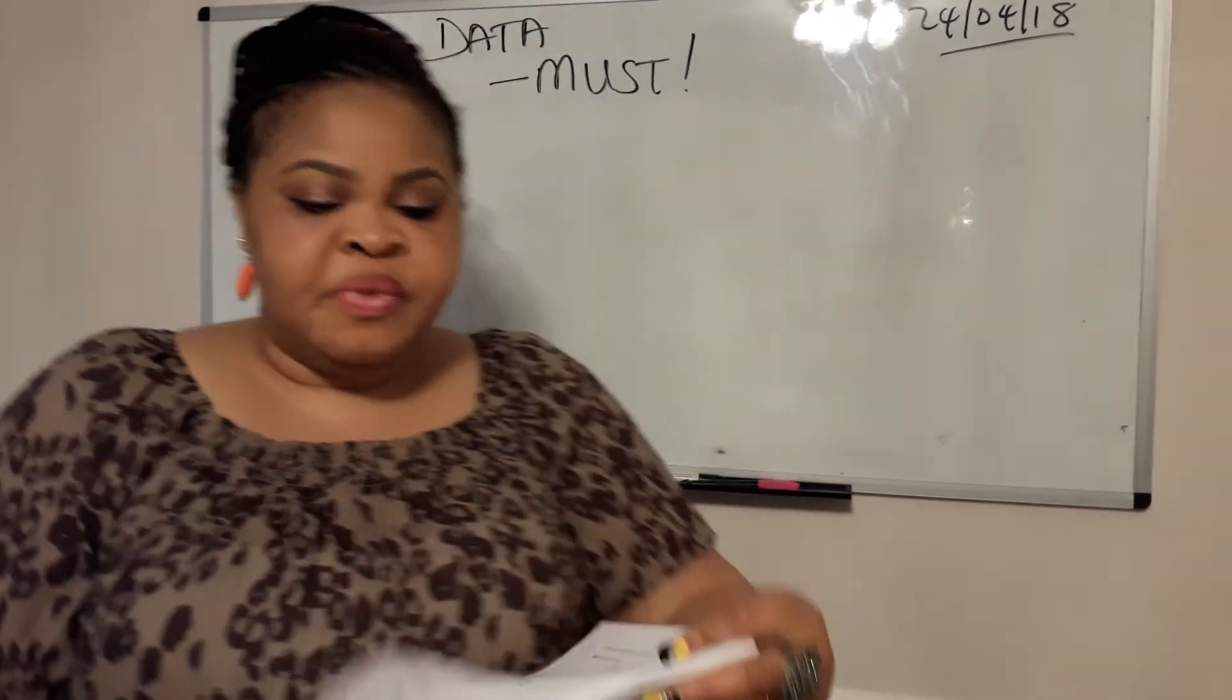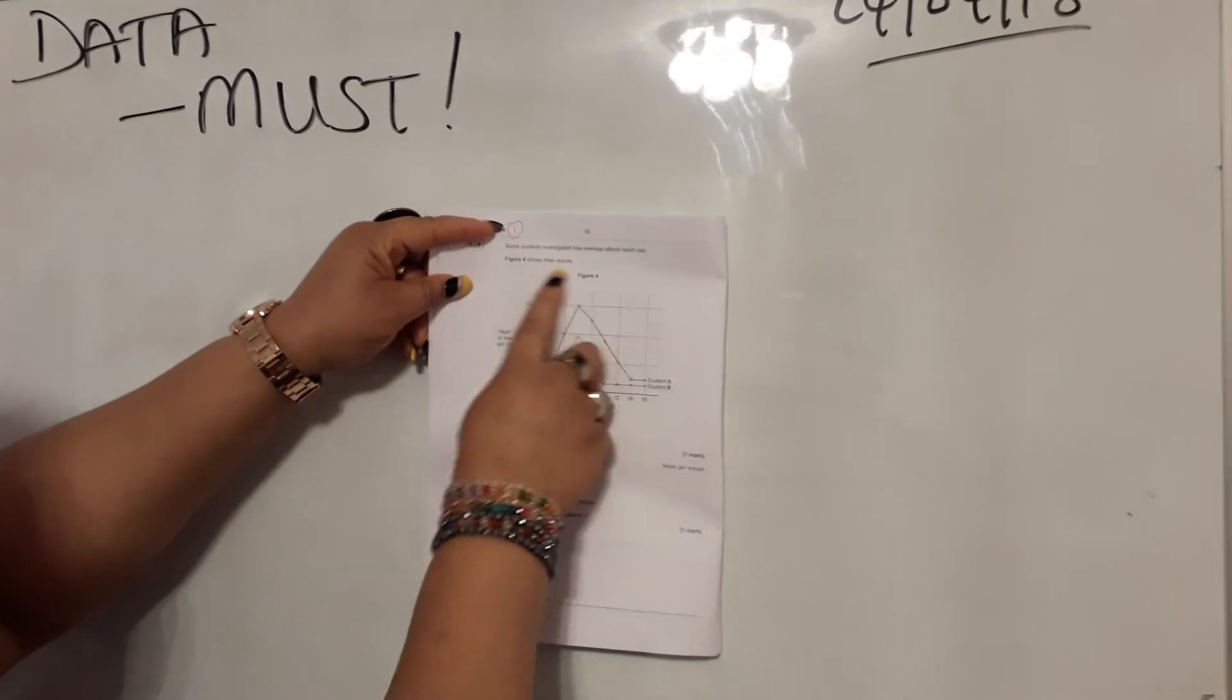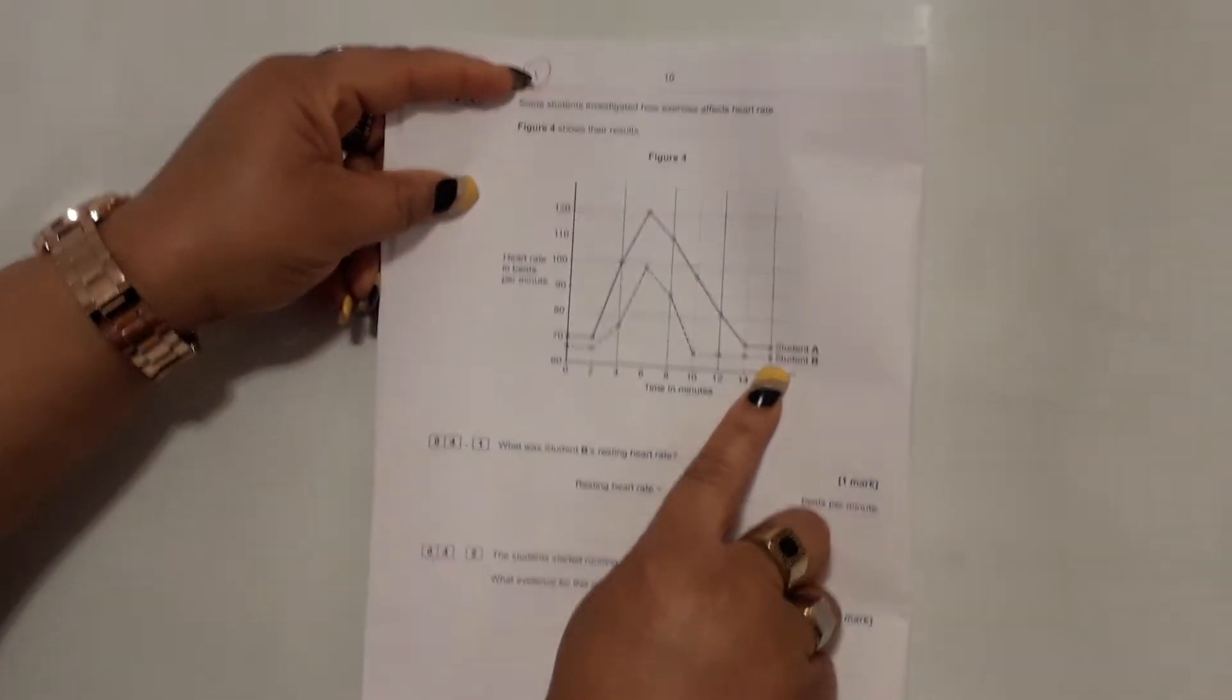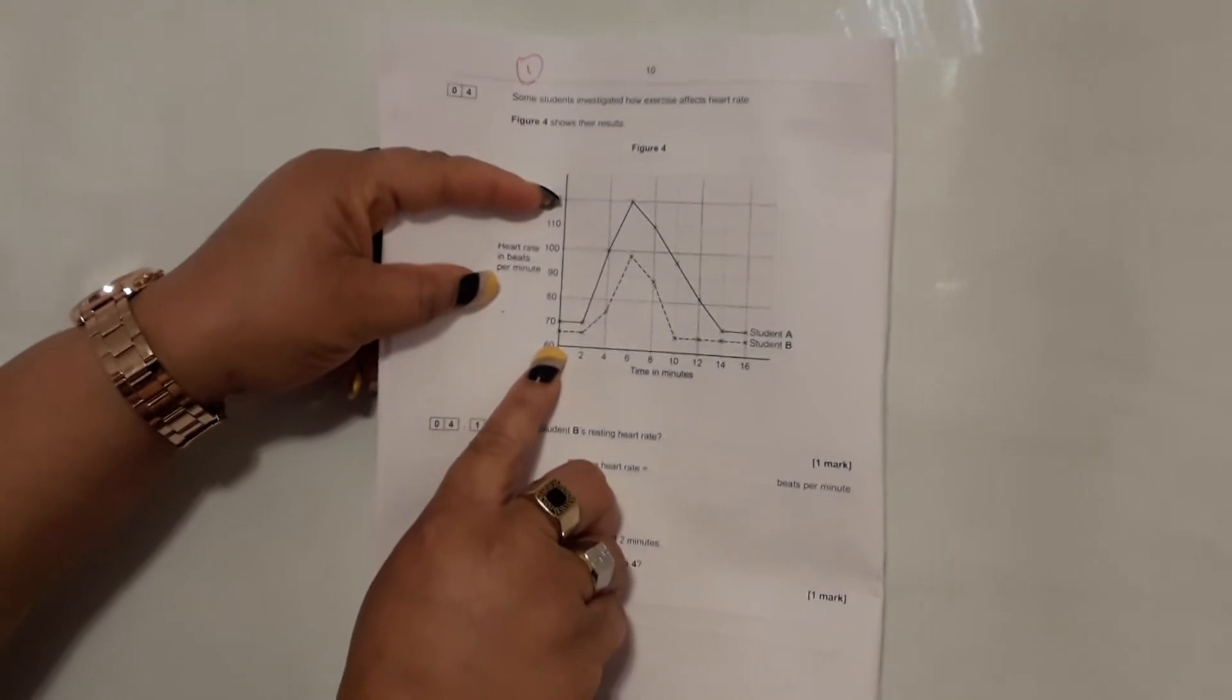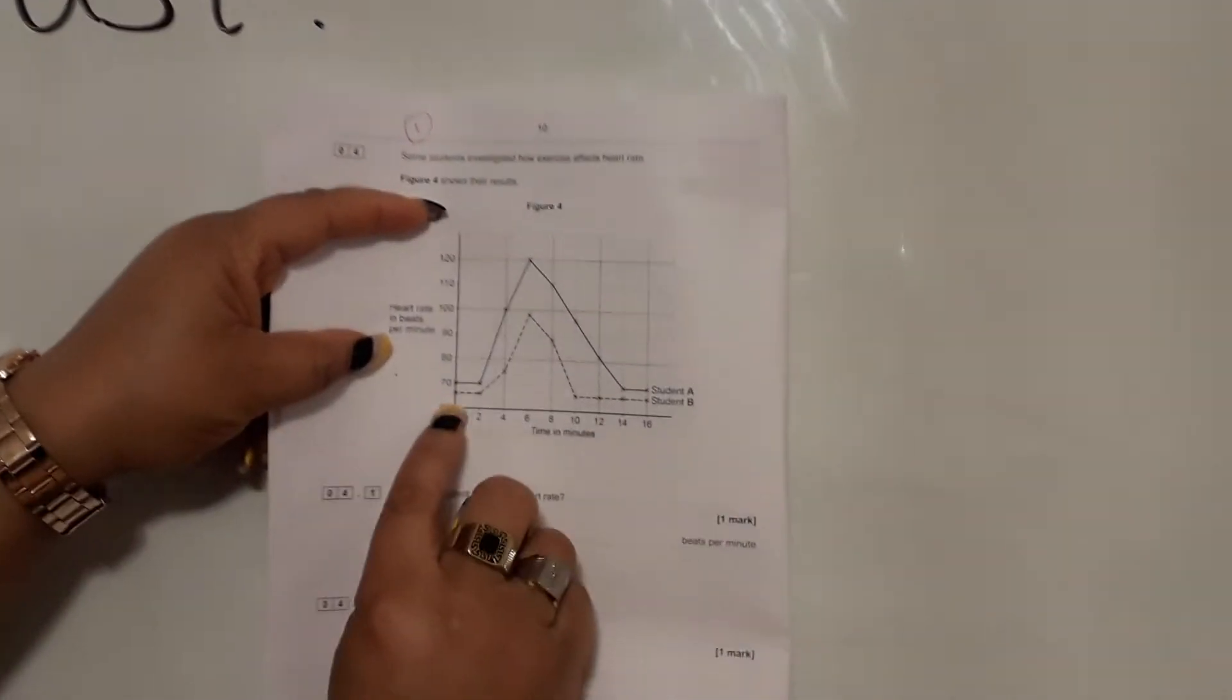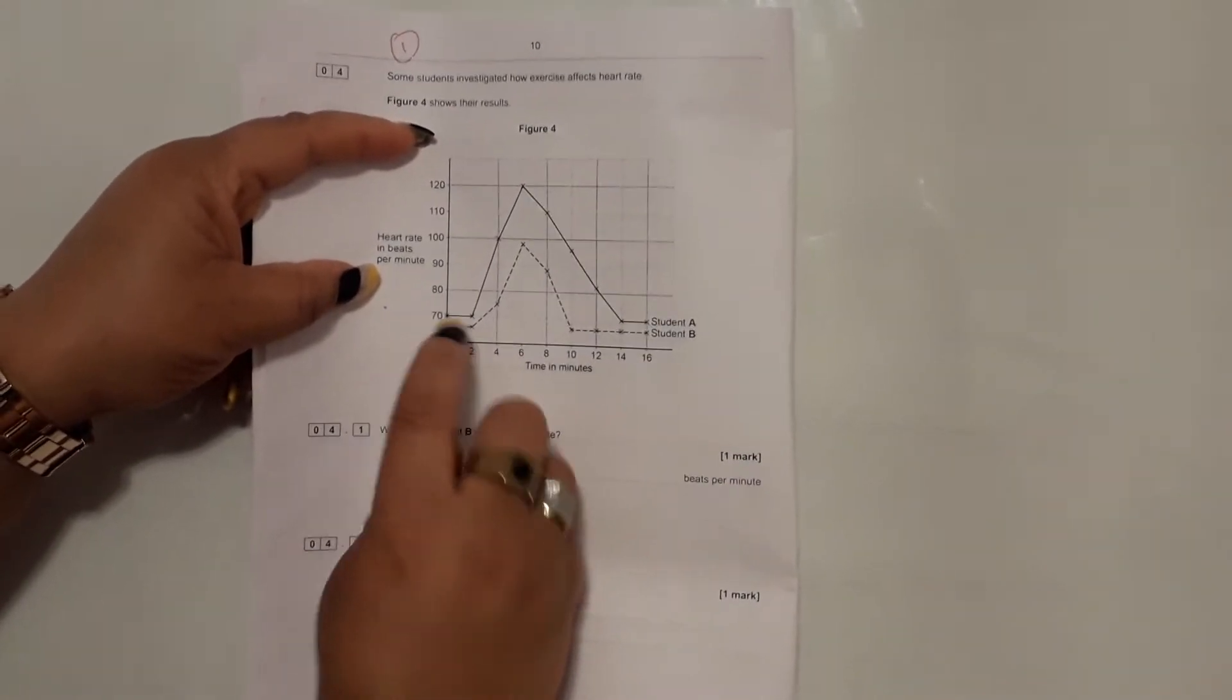It's so important that you answer the data question. I'm now quickly going to run you through just one of them, the very first one which is on page 10. It says some students investigated how exercise affects heart rate. Figure four shows their results. This side is the heart rate in beats per minute, and this side is the timing. This shows you the graph of student B and the graph of student A. It asks what was student B's resting heart rate? This is 60, so it starts from 60. Because this is 60 and that's 70, it goes up every 10 points. You know that every little graph space is two marks, and if I count one, two, three, there are three little boxes that have been covered from 60 before you get to 70. So that's extra six marks. So the answer to that is 66 beats per minute.